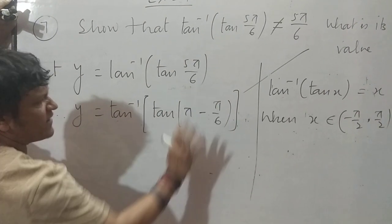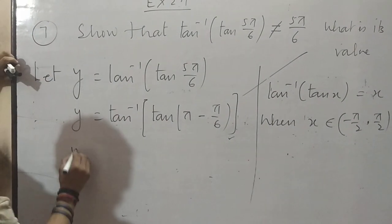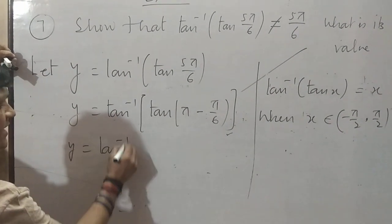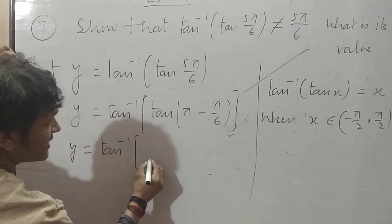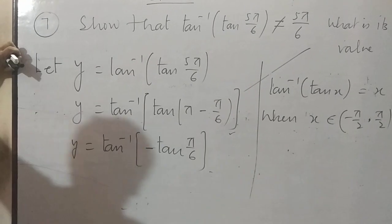6π minus π, 5π/6. We are correct here. One mark you got it in the board examination. Now final answer: tan inverse, tan 180 minus theta is minus tan theta, minus tan π/6.